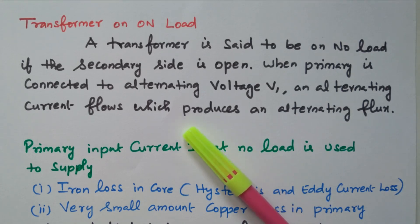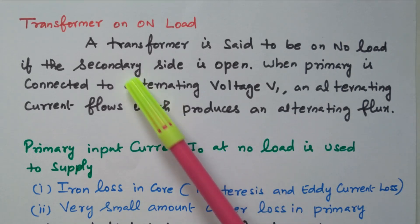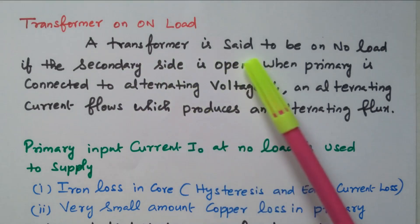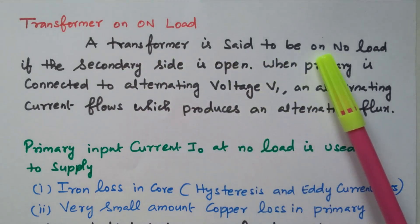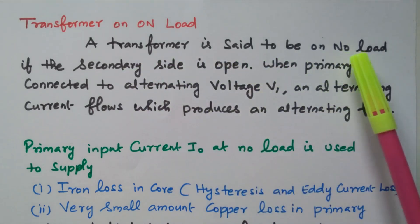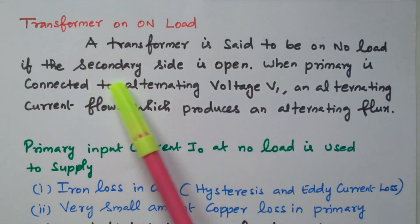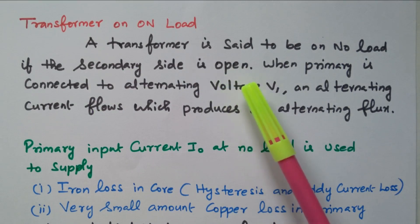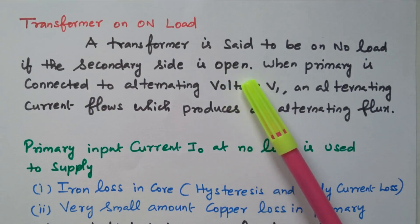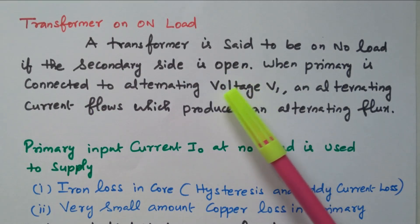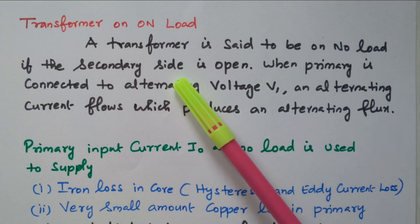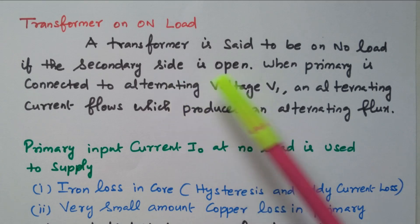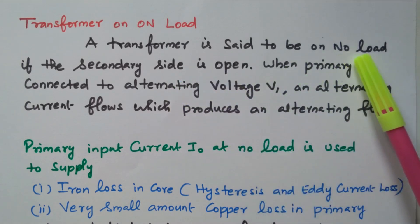Now we will see the topic. A transformer is said to be on no load if the secondary is open. We know that in a transformer we have a primary winding and a secondary winding; if the secondary winding is kept open, then it is called no load.